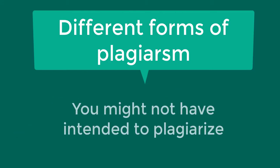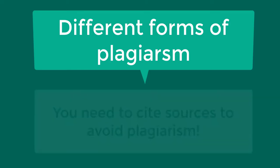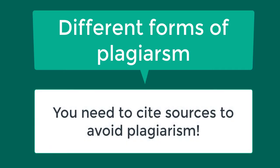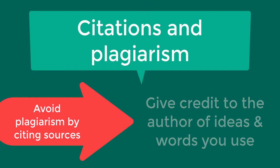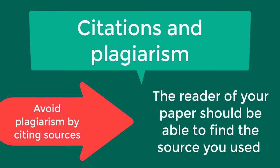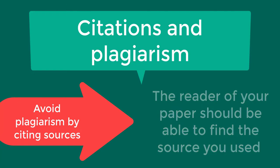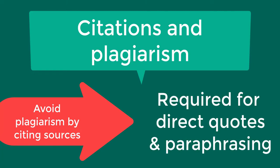You can see that plagiarism may be much more subtle than copying a friend's paper or copying directly from a source. Failing to properly cite sources can also be considered plagiarism. When you use citations, you provide the source of your information by giving credit to the original author. The reader of your paper should be able to see exactly where you found the information used for your assignment. Citing sources is required both when you directly quote a source and when you paraphrase a source.